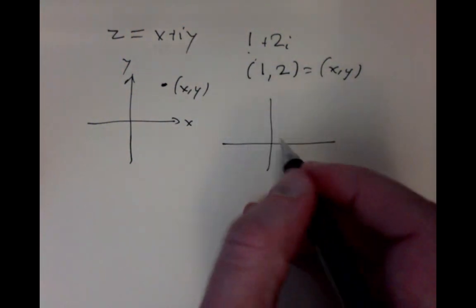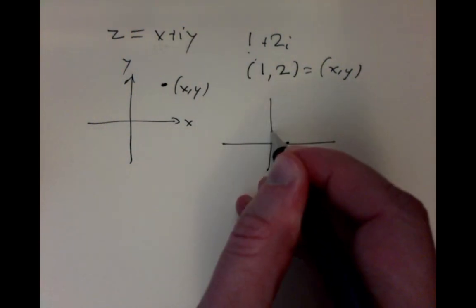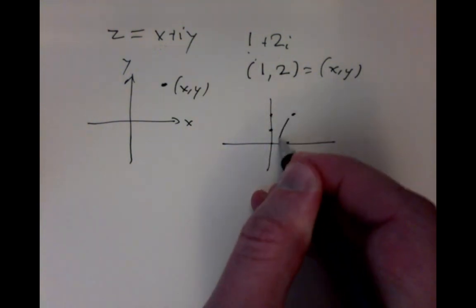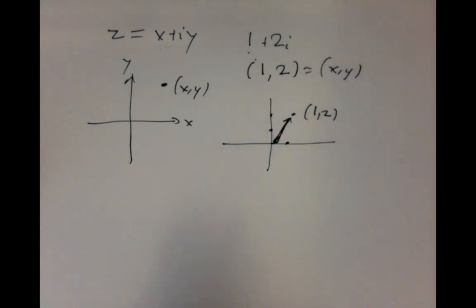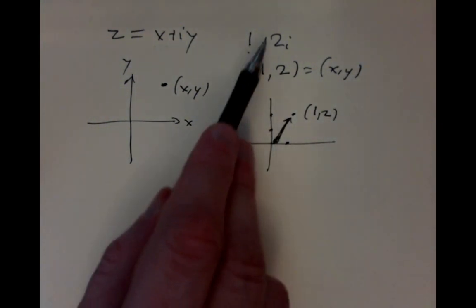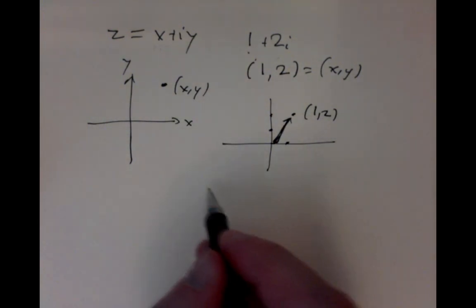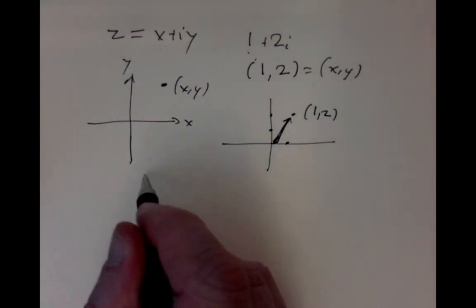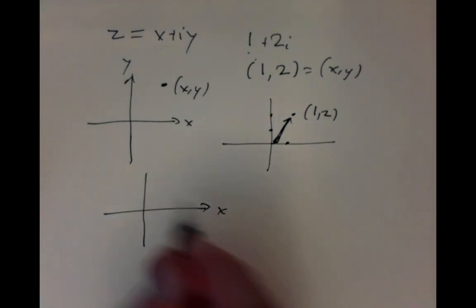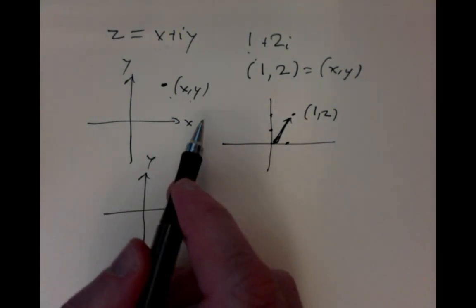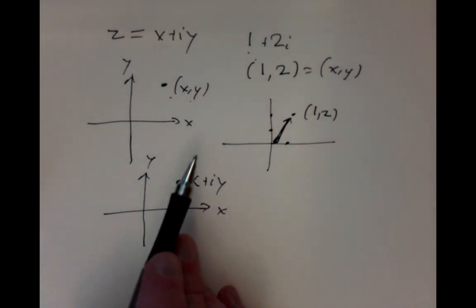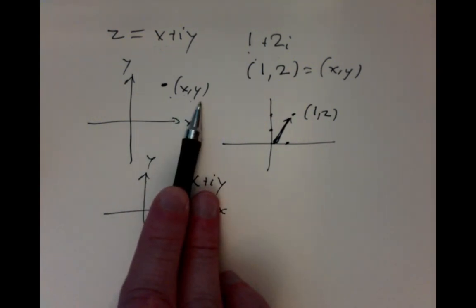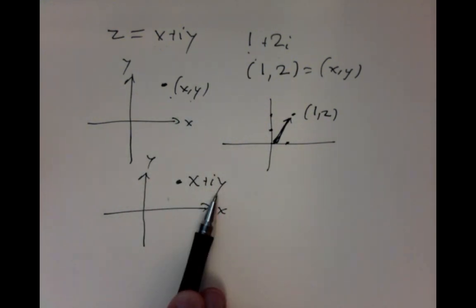For example, this point has coordinates 1 and then 2 up here — so that's the point (x, y) = (1, 2). But from now on, we'll think of it as the complex number; we'll identify them and say they're equal. Another way to think of it: instead of drawing a point as x comma y, we'll draw it as x + iy. That complex number is thought of as being that point.